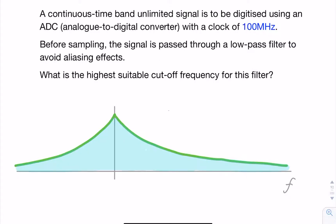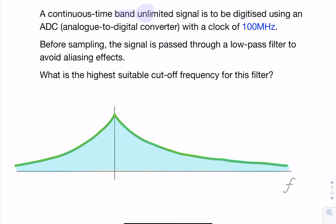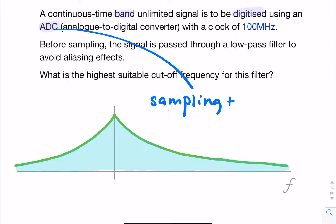We are given a signal described as band unlimited, meaning it extends throughout the frequency axis — it doesn't have a finite frequency band. But we nevertheless want to digitize it, so we're using an ADC, which is a sampler followed by a quantizer.